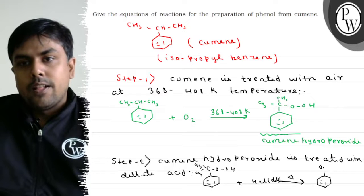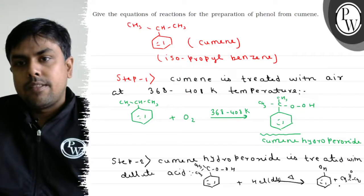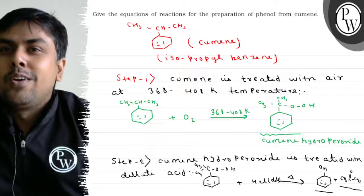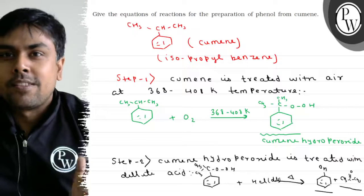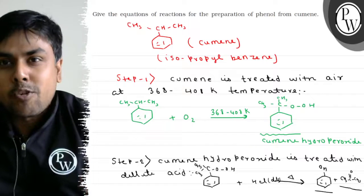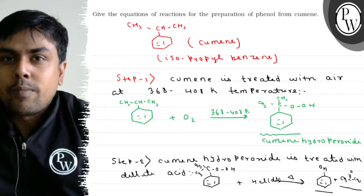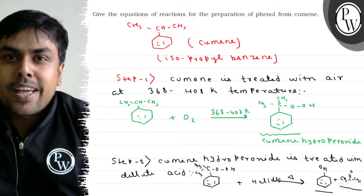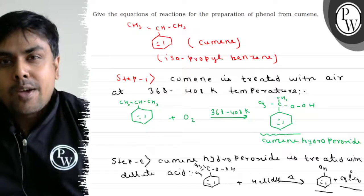What we get is phenol plus propanol as a byproduct. So phenol is synthesized from cumene in two steps: Step 1, formation of cumene hydroperoxide; and Step 2, reaction of cumene hydroperoxide with dilute acid to give phenol and propanol as a byproduct.